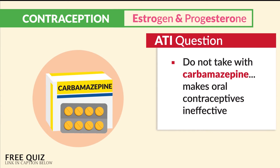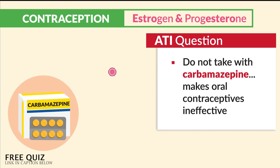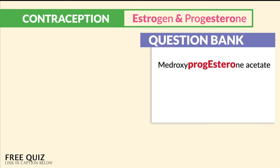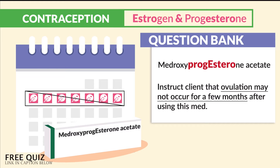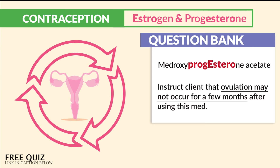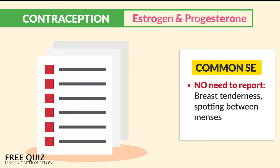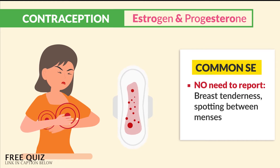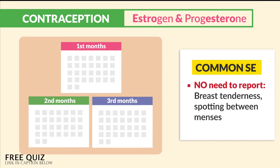ATI mentioned something very interesting: we do not take estrogen with carbamazepine, which is an anticonvulsant that makes oral contraceptives ineffective. Another question bank mentioned medroxyprogesterone acetate — we instruct clients that ovulation may not occur for a few months while using this medication, since it interacts with ovulation and can disrupt regular cycles. A common side effect is breast tenderness or spotting between cycles, which usually improves within three months when first starting the medication.